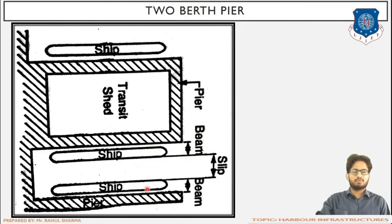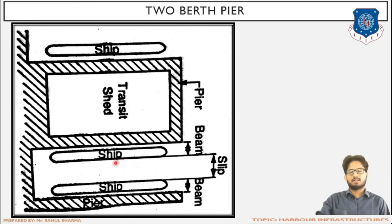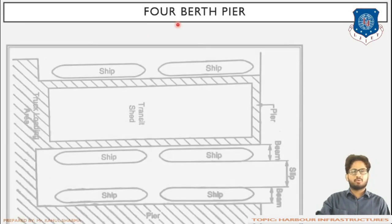The beam refers to the width of the ship. Slip indicates the gap between two ships — the transverse gap between two ships is nearly three to four times the beam or width of the ship. When deciding the slip, we must account for the widest ship visiting the harbor to ensure no hindrance to other operations in the harbor area.